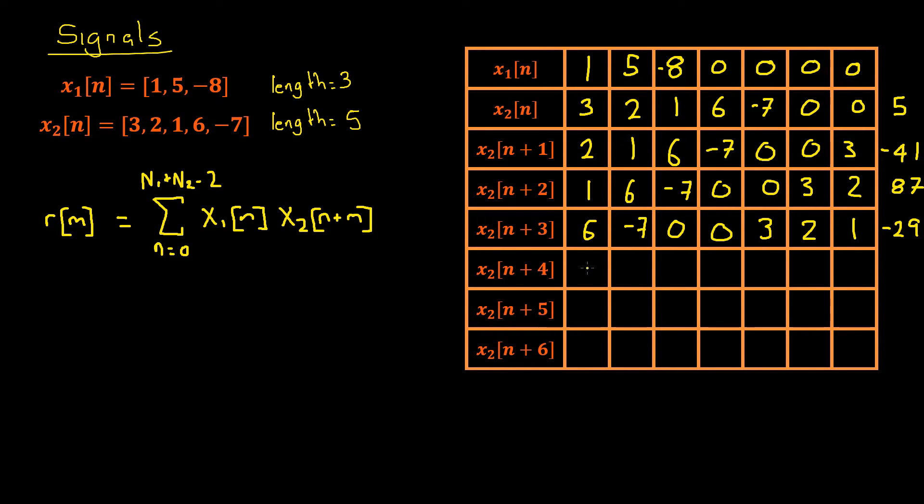We'll repeat this process for the remaining 3 iterations. Okay, so there we have it, we have our r of m array. Let's quickly rewrite that now.